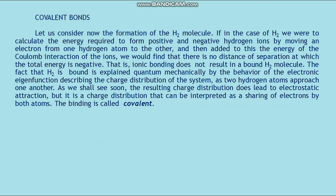Now consider the formation of the hydrogen molecule H₂. If we were to calculate the energy required to form positive and negative hydrogen ions by moving an electron from one hydrogen atom to the other, and then add the energy of the Coulomb interaction of the ions, we would find that there is no distance of separation at which the total energy is negative. That is, ionic bonding does not result in a bound hydrogen molecule.